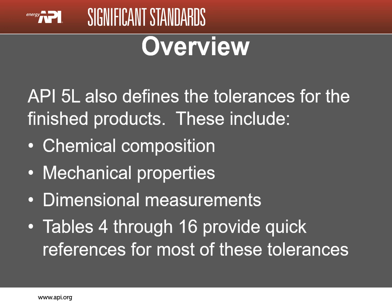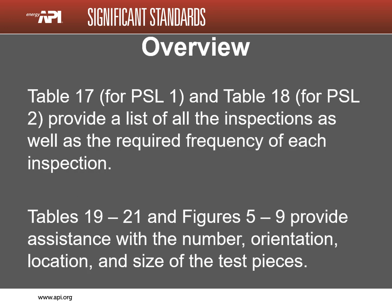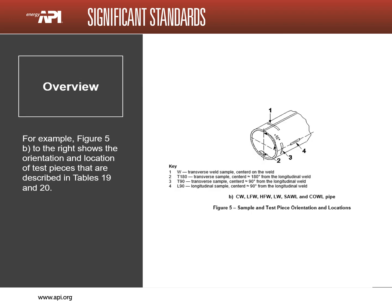Tables 4 through 16 provide quick references for most of these tolerances. Tables 17 for PSL 1 pipe and Table 18 for PSL 2 pipe provide a list of all the inspections, as well as the required frequency of each inspection. Table 18 describes the frequency of 28 inspections. Note that since the type of inspection is dependent upon the type of pipe, some of the listed inspections may not be required. Tables 19 through 21 and figures 5 through 9 provide assistance with the number, orientation, location, and size of the test pieces. This figure is an example of the information that is provided. It shows the orientation and locations of test pieces for pipe with straight weld seams. There are similar figures for seamless and helical pipe.